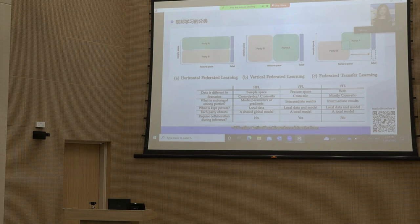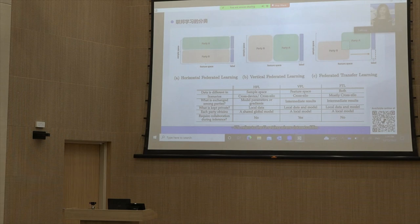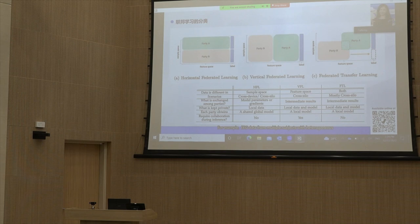VFL refers to the FL setting where datasets share the same samples while holding different features. For example, WeBank uses VFL to collaborate with an invoice agency to build financial risk models for their enterprise customers. FTL refers to the FL setting where datasets differ in both feature and sample spaces with limited overlaps. For example, EEG data for multiple subjects with heterogeneous distributions is used to collaboratively build models using FTL.